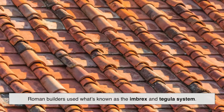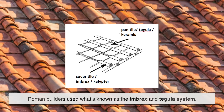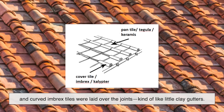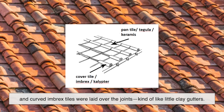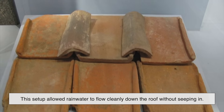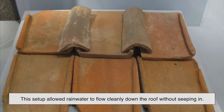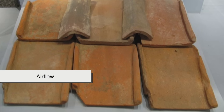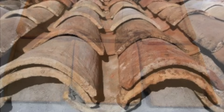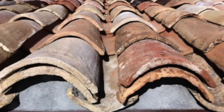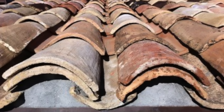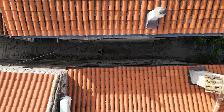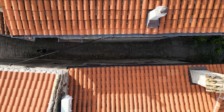Roman builders used what's known as the Imbrex and Tegula system. The flat Tegula tiles were placed side by side, and curved Imbrex tiles were laid over the joints — kind of like little clay gutters. This setup allowed rainwater to flow cleanly down the roof without seeping in. It also helped with airflow under the tiles, reducing heat buildup. Over time, the design evolved into a single tile with a built-in curve. Simple, effective, and very Roman.